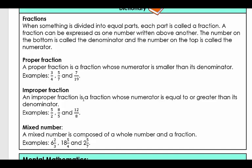An improper fraction is a fraction whose numerator is equal to or greater than its denominator. So what you will see here, the numerator is greater in each case. Five halves, eight fifths, twelve eighths.